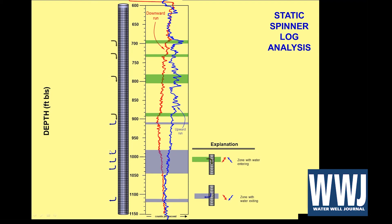In this well, we did a static spinner and saw high nitrate throughout, which we knew originated from the upper interval. We were able to fix this well and bring it to within drinking water standards without reducing its water production. There are many ways to fix an old well — it's like an old house type of approach, and it's a good thing to do.